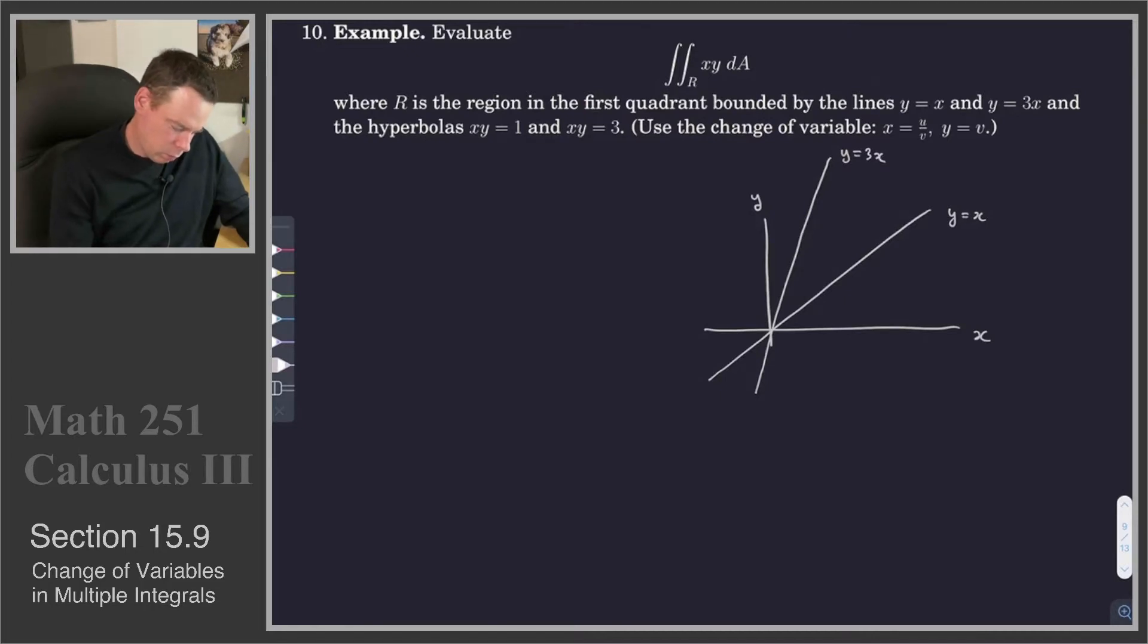xy equals 1, so it comes down like this. xy equals 1, and then we've also got xy equals 3. So that's out a little bit further. xy equals 3.